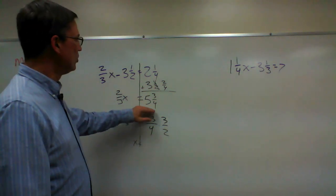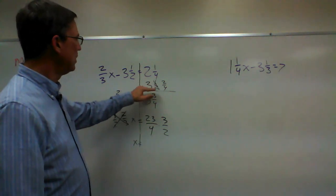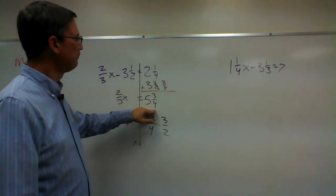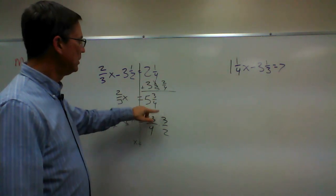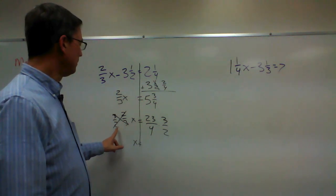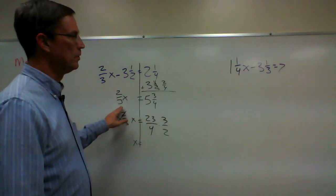So first bring this over, add them, get a common denominator. Whenever you're adding fractions, you have to have a common denominator. Then turn it from a mixed number into an improper fraction, and then we can multiply by the reciprocal of this fraction.